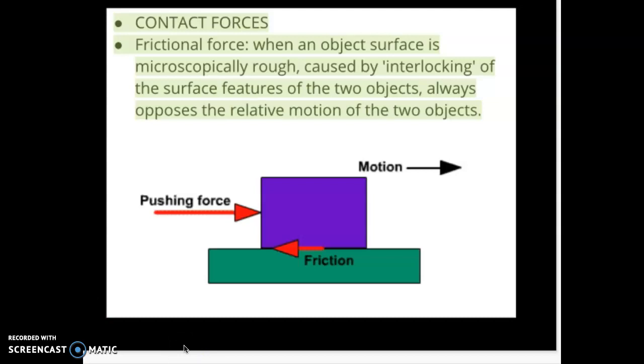Because even on a microscopic level, even if something looks smooth, on a microscopic level it's actually probably quite rough. And when you have two surfaces that have that kind of rough edge to them, they interlock and they stop each other from moving.